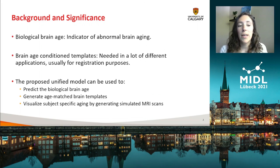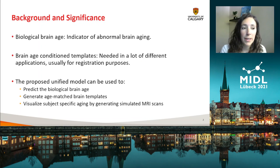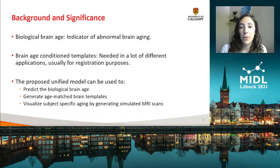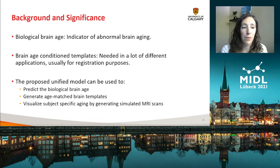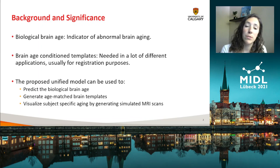First, I'd like to introduce the term biological brain age, which can be estimated using brain MRI scans or extracted features and compared to the chronological age of a subject in order to detect any abnormal brain aging. For example, it can be used as a biomarker in the case of neurological disease.